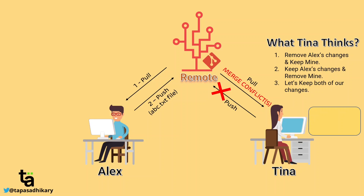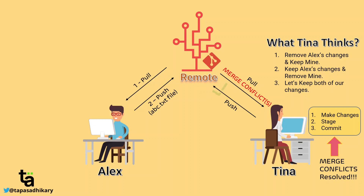Once Tina decides, she will perform a few steps. First, she makes the changes based on her decision. Then she stages the changes — she does git add on the file. Then finally she does a git commit. The decision-making and performing all these steps together is called resolving merge conflict. After this, the merge conflict is resolved, and Tina attempts another push — this time the push is successful.